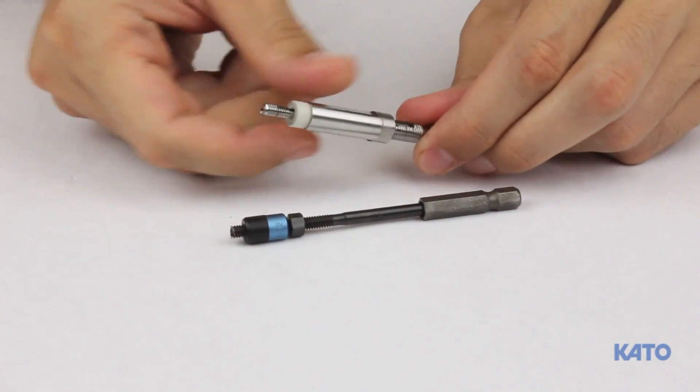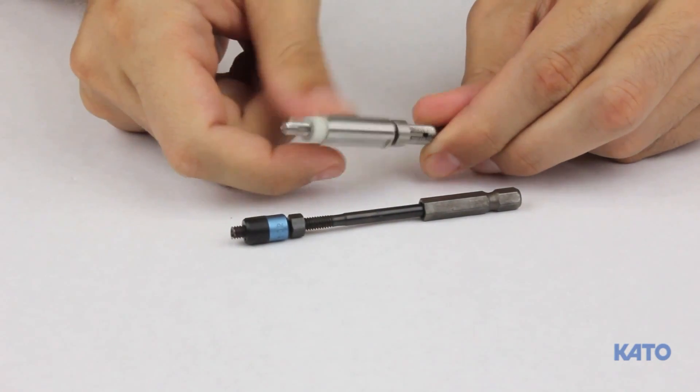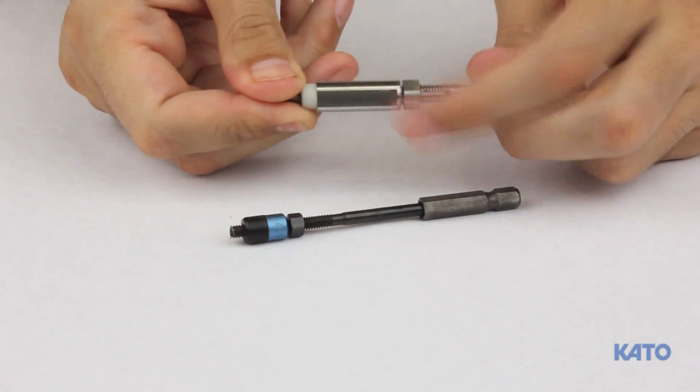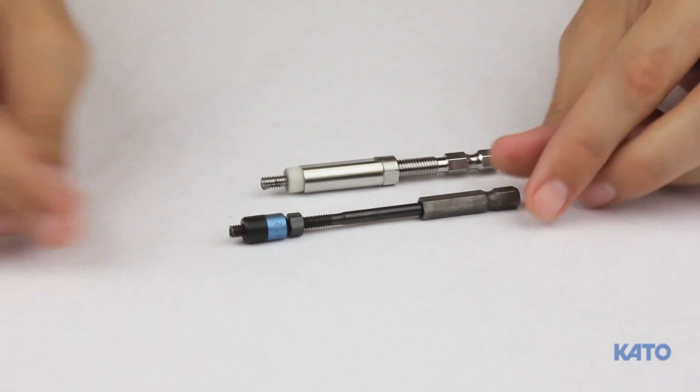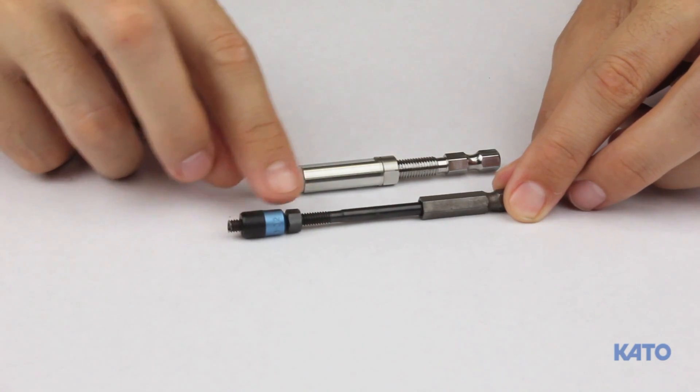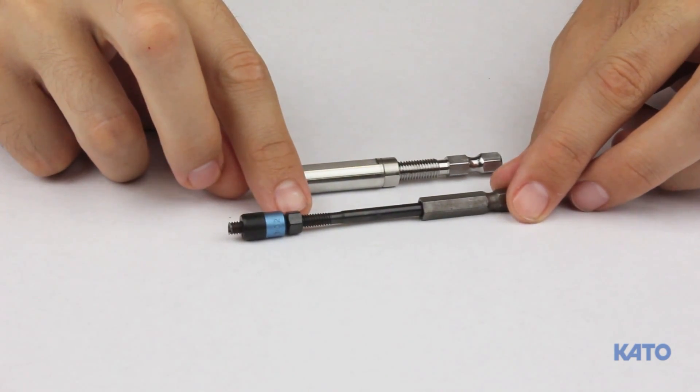Here is the adjusting sleeve that will control the installation depth. Use the lock nut to tighten the adjusting sleeve. The tang tool also has an adjusting sleeve and lock nut. Although they look different, they function the same.